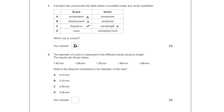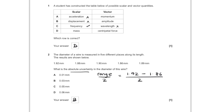For question number two, the diameter of a wire is measured in five different places along its length, and we need to work out the absolute uncertainty in the diameter. The way you work it out is simply to take the range and divide it by two, so that will be 1.92 minus 1.86 over 2. The answer will be 0.03, and B is the correct option.